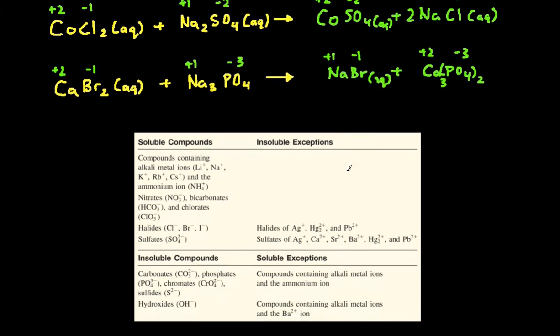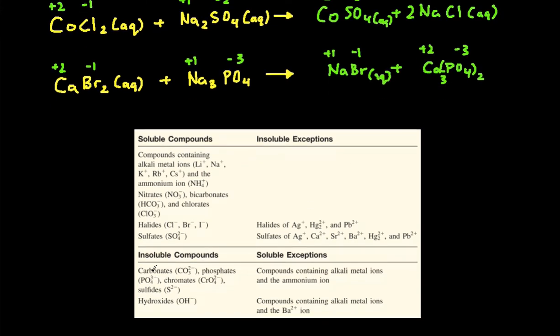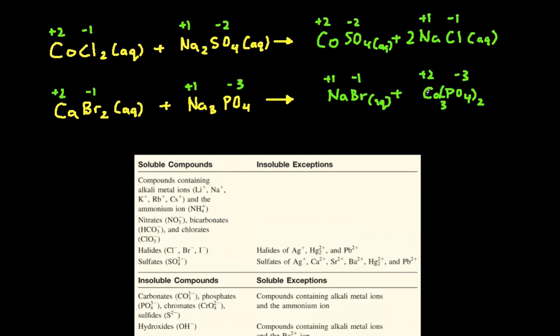Calcium phosphate. So we look at phosphate. It says that phosphates generally are insoluble unless it contains an alkali ion or ammonium ion. And calcium is neither of those. So that means this compound is going to be insoluble. So it's going to be a solid.